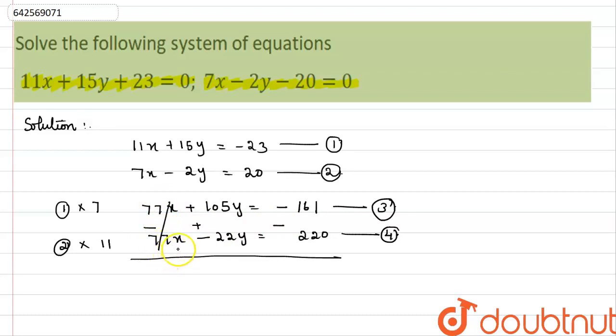77x minus 77x is 0. Then 105 plus 22, so we will get 127y equals negative 381.